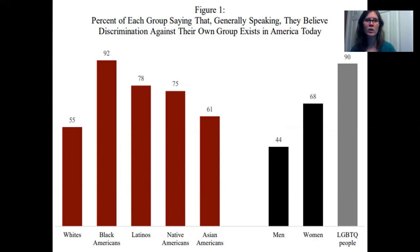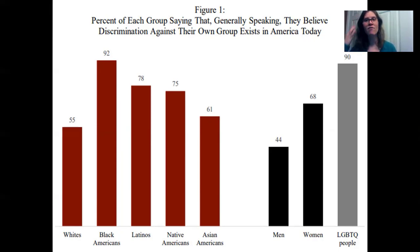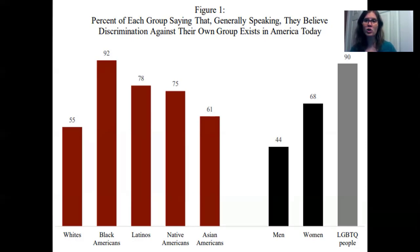Looking further at this report, the number one area where people feel discriminated against is in the workplace — specifically regarding hiring, getting job interviews, equal pay, and promotion. One striking piece of research examined the influence of a name on getting a callback for a job interview. Researchers submitted 5,000 job applications, changing only the name on otherwise identical resumes, using historically white names and historically African-American names. Individuals with white-sounding names were significantly more likely to get callbacks than those with historically African-American-sounding names.